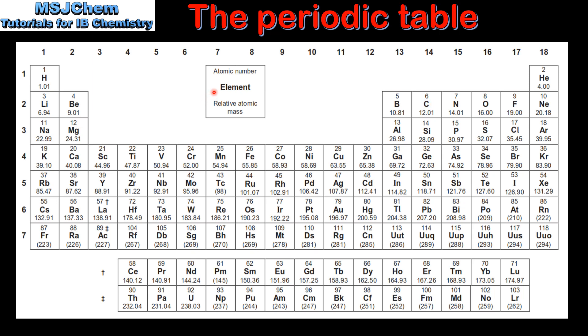The number below the symbol for the element is the relative atomic mass. This is the weighted average mass of an atom compared to the isotope carbon 12.